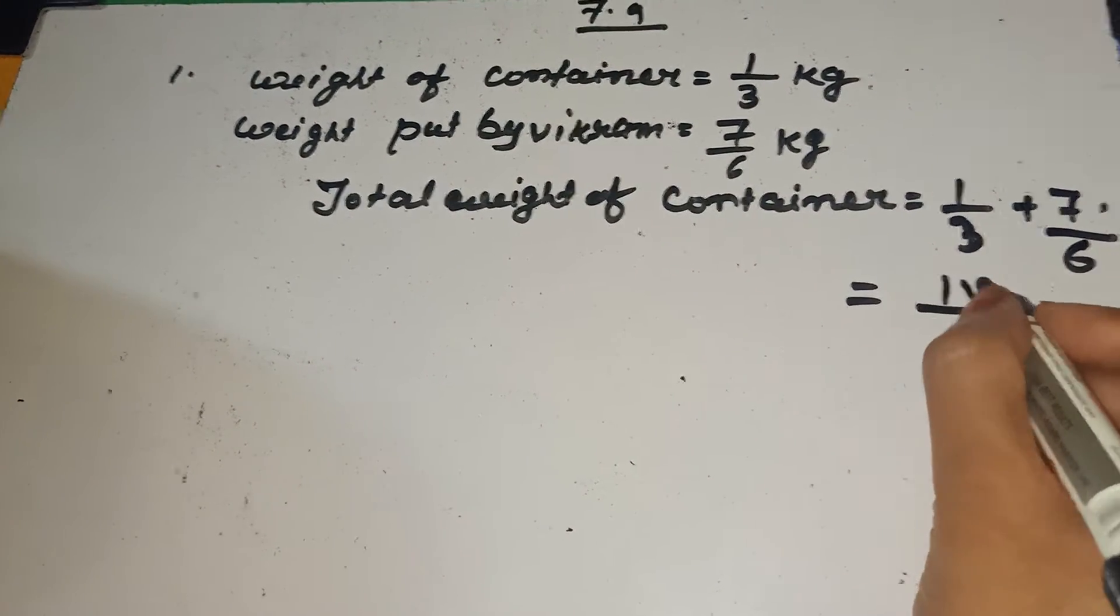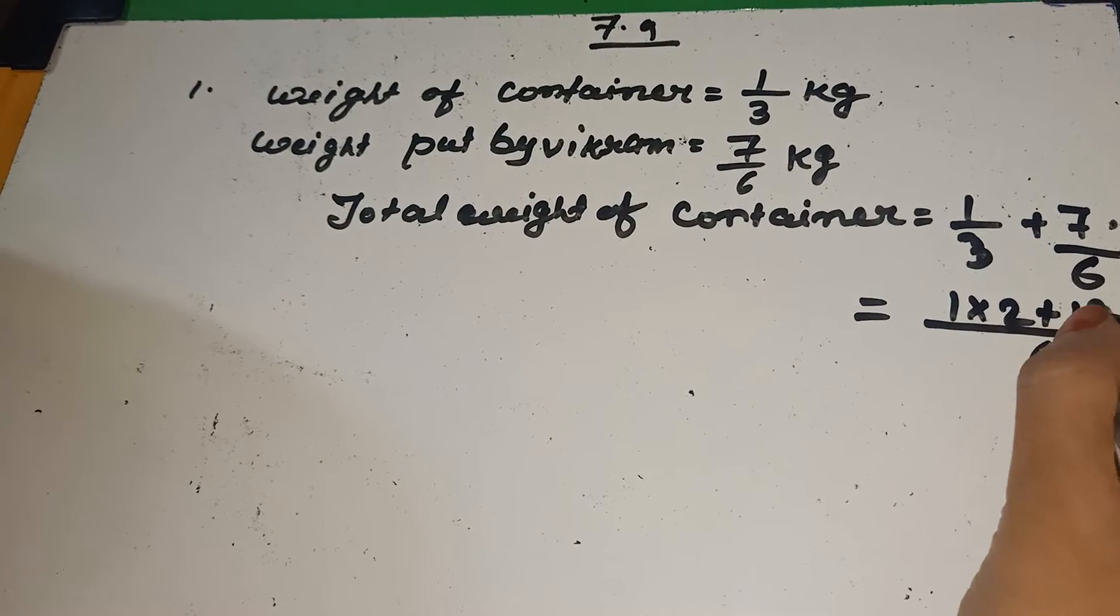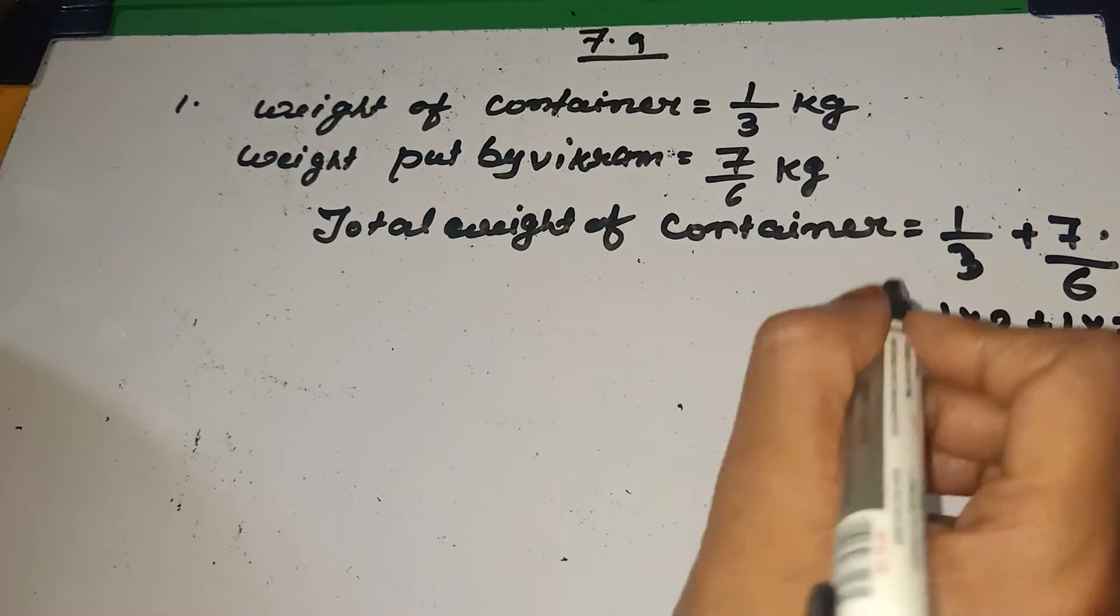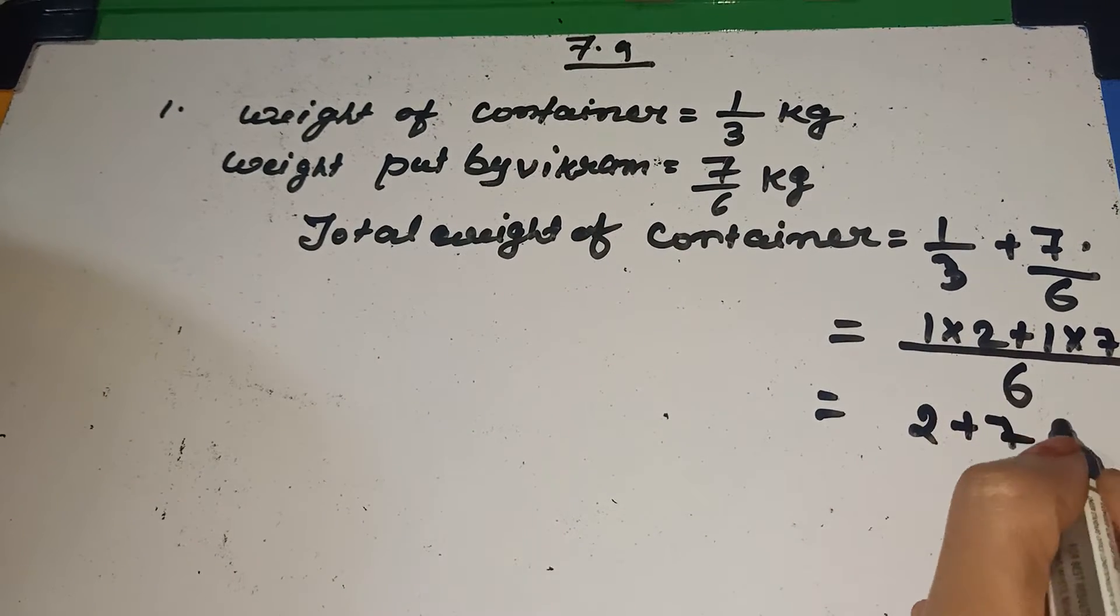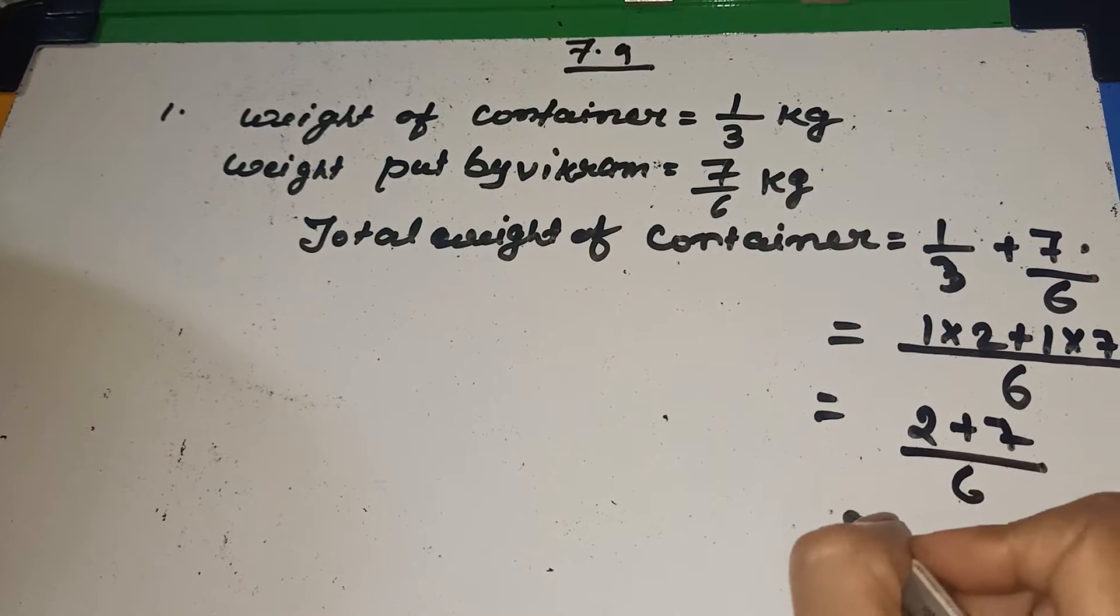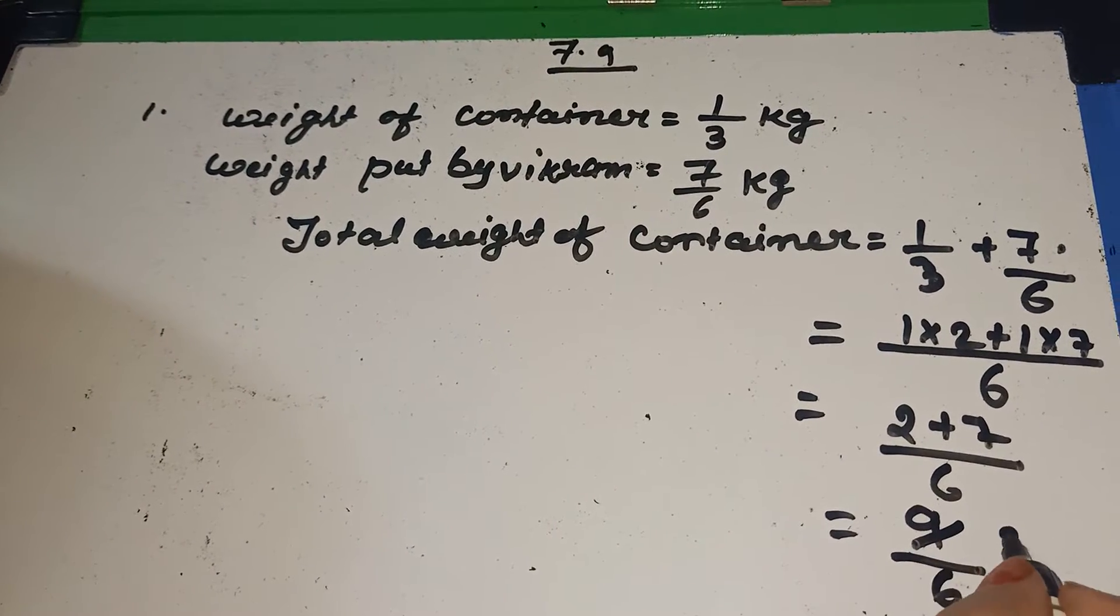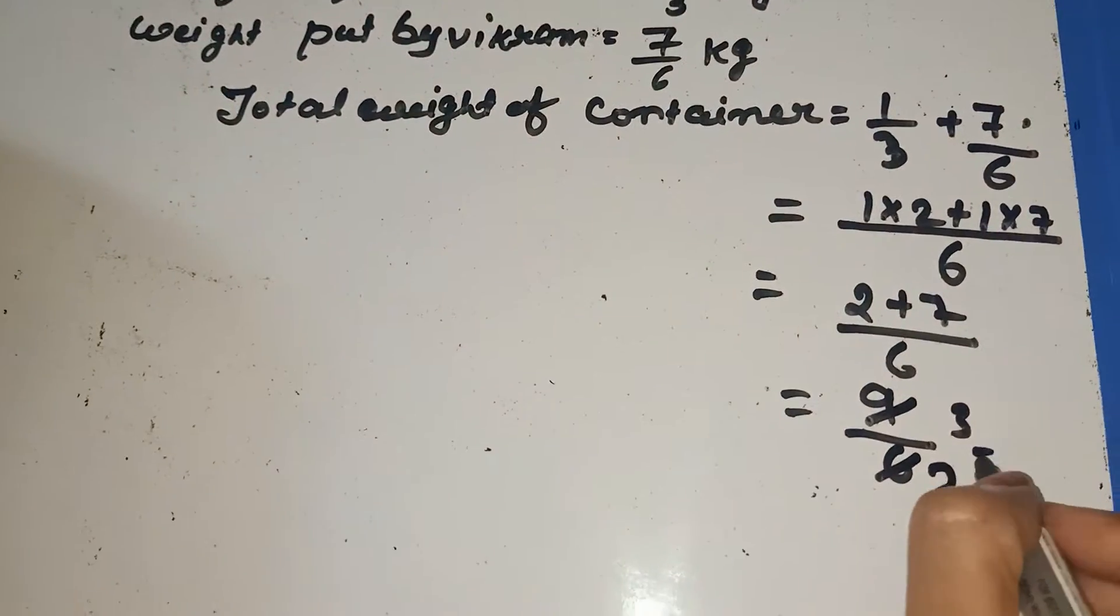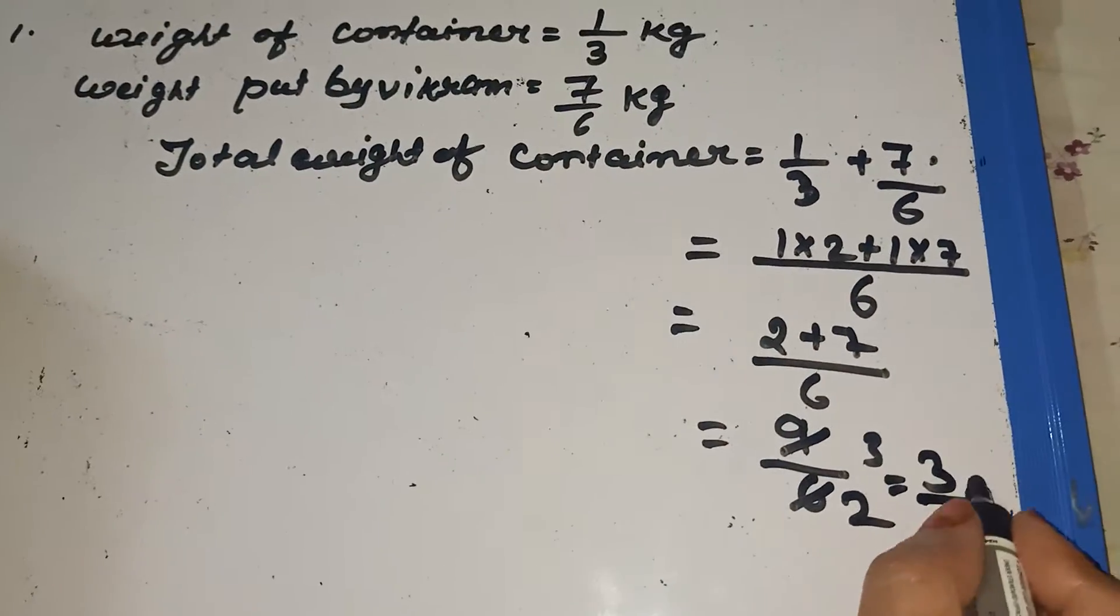We write like this, 1 into 2 plus 6, 1 is a 6. 1 into 7. And it is 2 plus 7 by 6. 9 by 6. 3, 3 is a 9. 3, 2 is a 6. So total answer is 3 by 2.